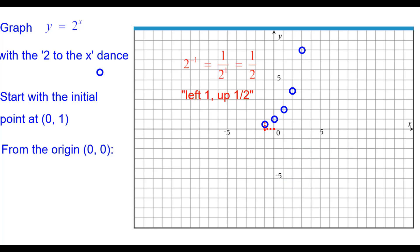On the other side, left 1 up 1 half, 2 to the negative 1 power is the reciprocal of 2 which is 1 half. Left 2 up 1 fourth, 2 to the negative 2 is 1 over 2 squared which is 1 fourth.